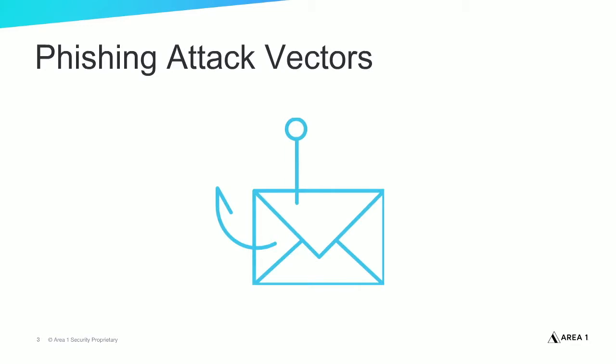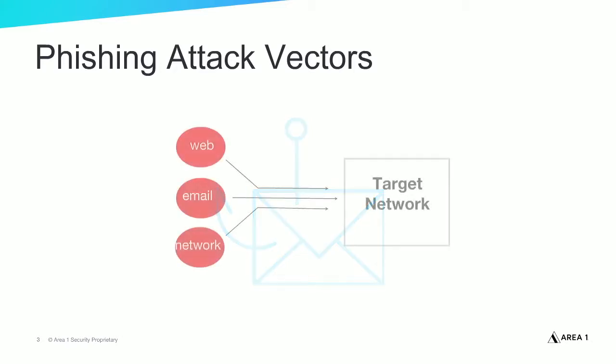When we think of phishing attacks, the first thing that comes to mind is often phishing email. However, if all of the email systems in the world shut down tomorrow, would phishing attacks stop? Unfortunately, no. The attack vectors hackers use to execute phishing campaigns aren't limited to only email traffic, so defense strategies that focus on protecting just email will miss phishing activity on other attack vectors. For best protection, your security strategy needs a unified approach to protect you from phishing activity across all common attack vectors.